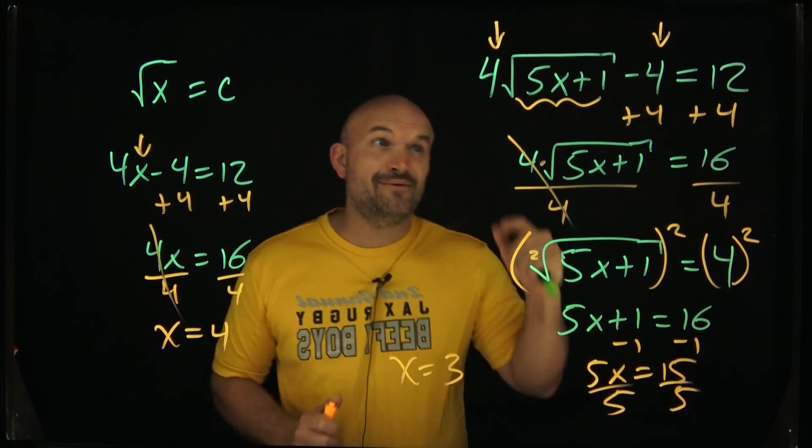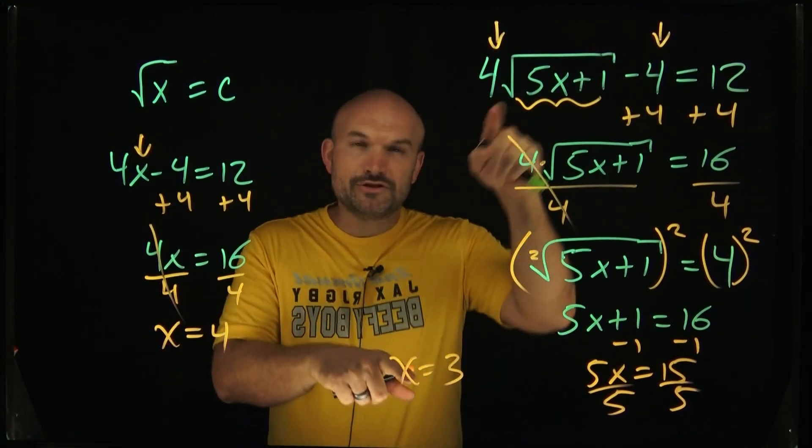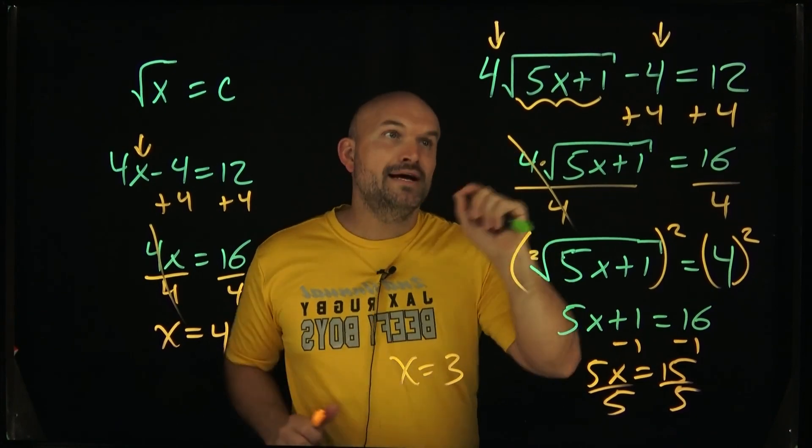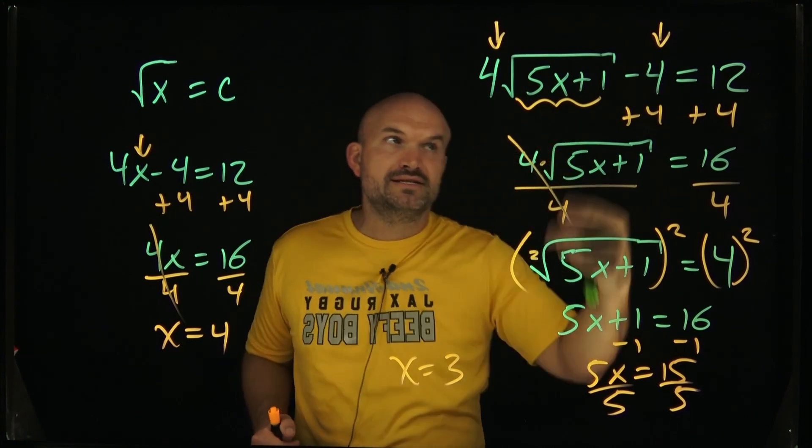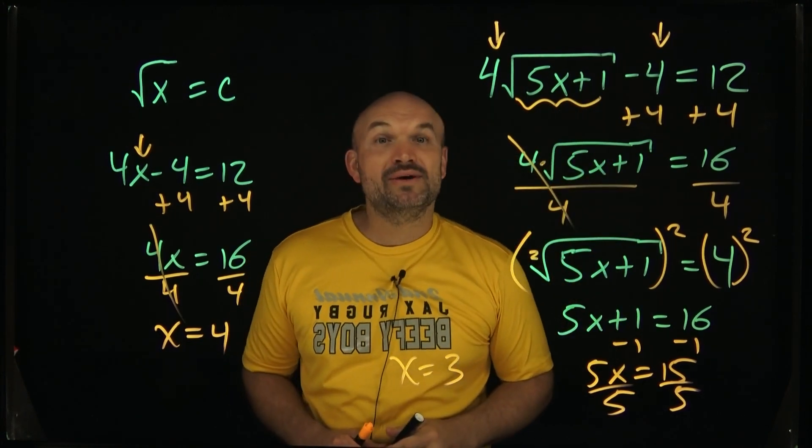So before I go ahead and finish the video, I want to make sure mentally, does this answer check? Does this answer work? And so when I plug in 3, 15, that's plus 1, 16, that's going to be square root of 16 is 4, 4 times 4 is 16, minus 4 is 12. And it looks like we are all set.